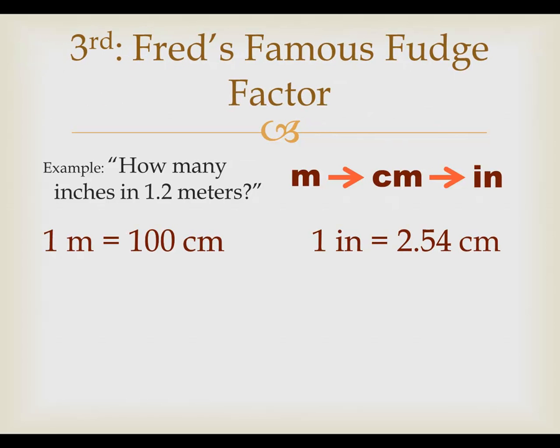We're now ready for Fred's famous fudge factor. That's a calculation method in which we're paying attention to units. To get started, we'll draw a grid like this, and we'll put the number that we start with, in this case 1.2 meters, in the upper left corner. It's really crucial that you write down the unit as well as the number, because the unit is going to tell you how to cancel out the next thing.